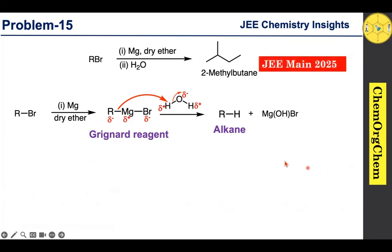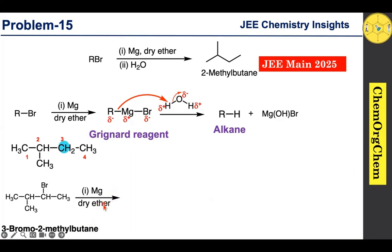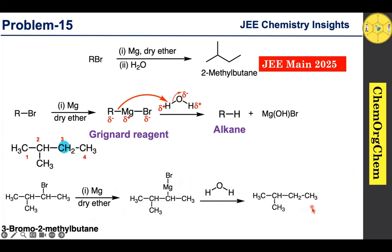Now consider 2-methylbutane again. If the third carbon has the bromine atom, that produces 3-bromo-2-methylbutane. This reacts with magnesium in dry ether to form the corresponding Grignard reagent, which then reacts with water to produce exactly 2-methylbutane. This is our second possibility.